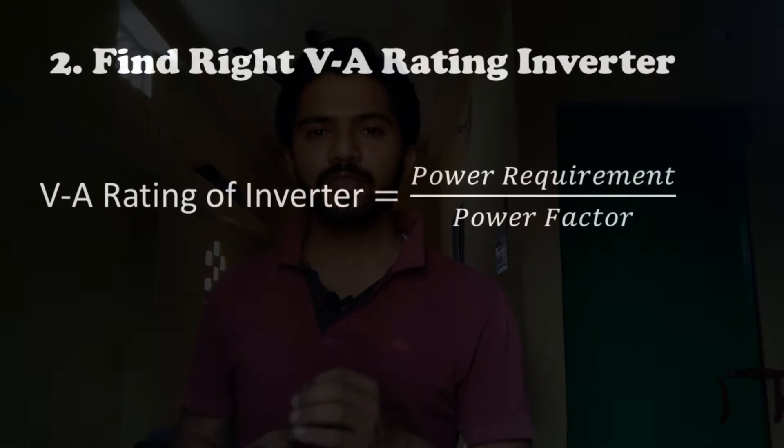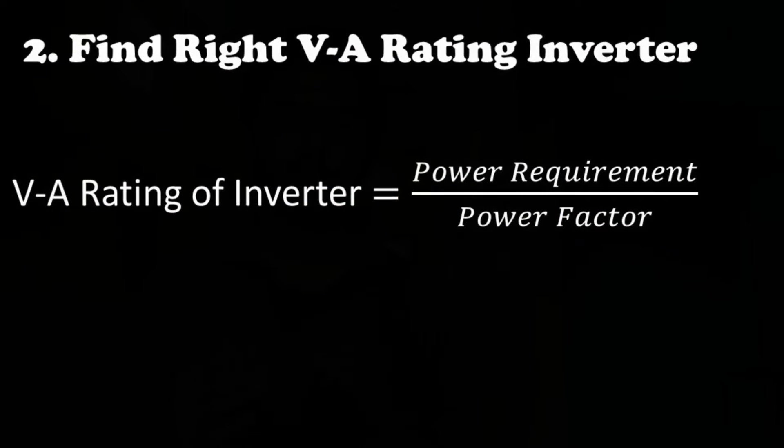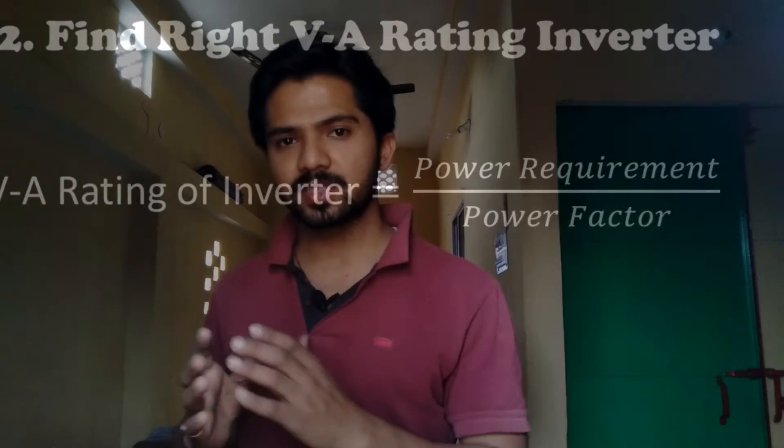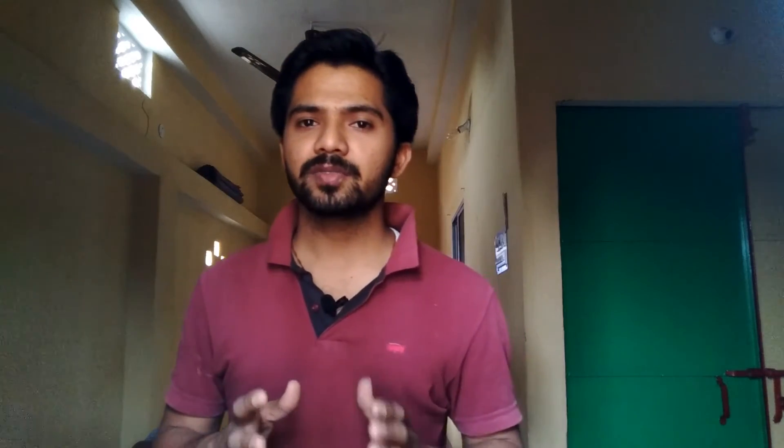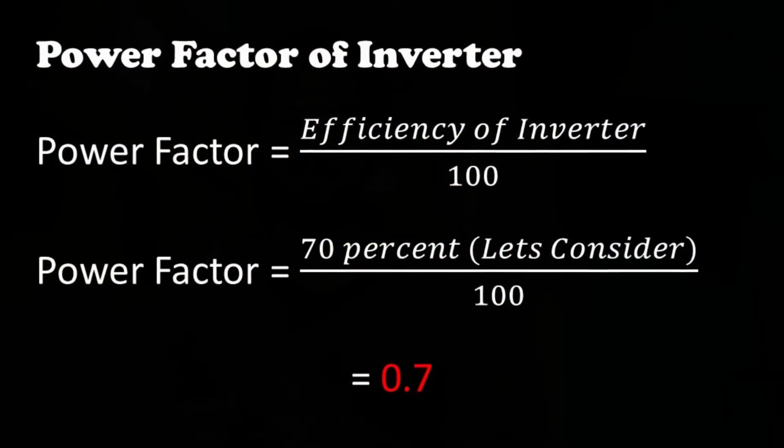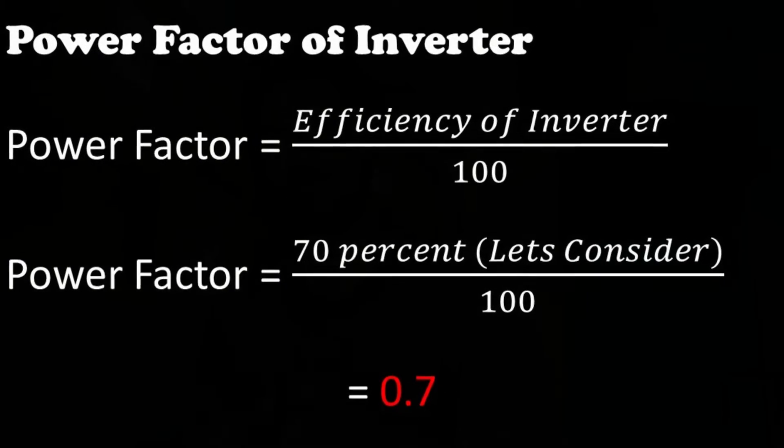Now let's start with the second step in which we have to find the right VA rating inverter. To find the right VA rating inverter, we have a formula: VA rating of inverter equals power requirement divided by power factor. We calculated the power requirement in the first step. For power factor, we divide the efficiency of the inverter by 100. In the market, you get inverters with an efficiency range of 60 to 80 percent — 100 percent efficiency is not possible as that is an ideal case. I consider the efficiency of my inverter to be 70 percent, so the power factor is 70 divided by 100, which equals 0.7.